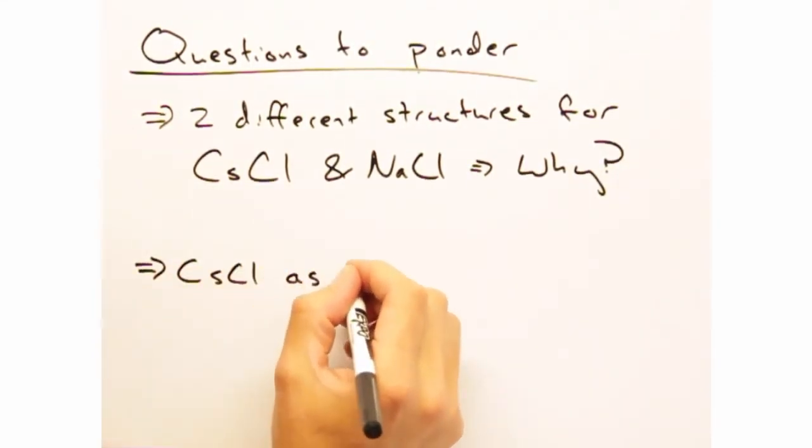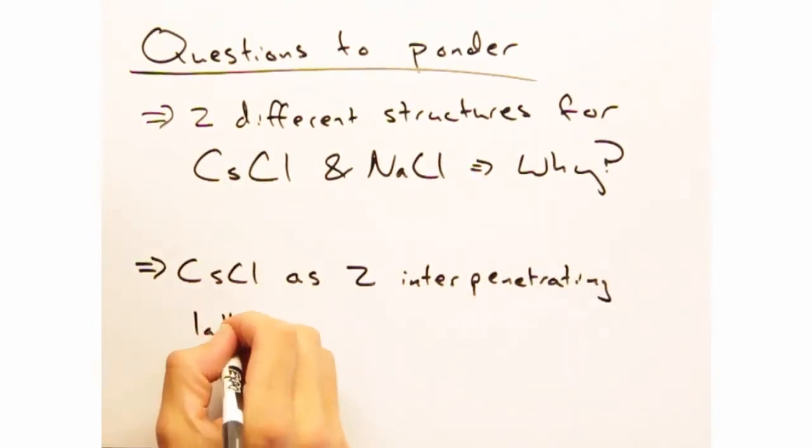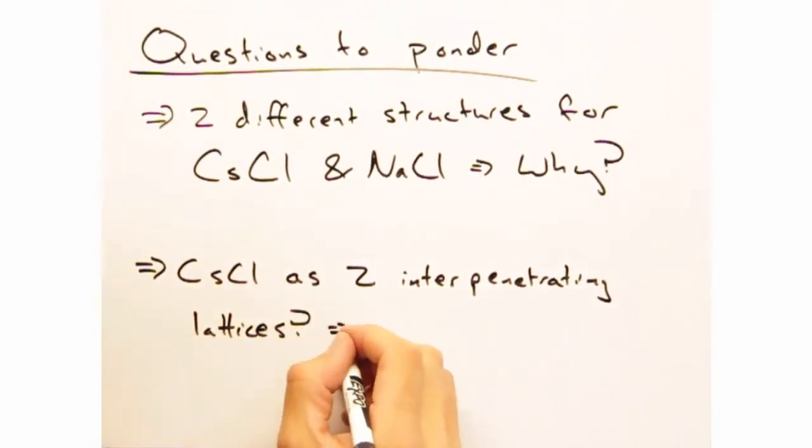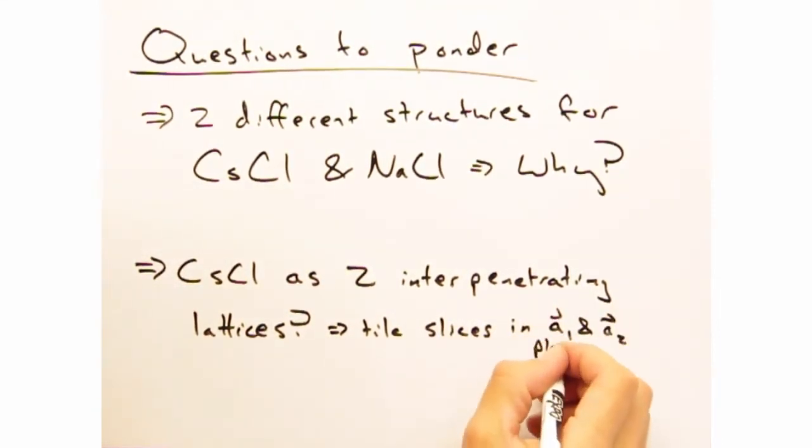And finally, to get you a bit more practice with slices, take a look at cesium chloride. Can you describe this material as two interpenetrating lattices? If so, which ones? I'd suggest tiling your slices in the A1, A2 plane.